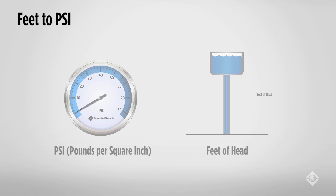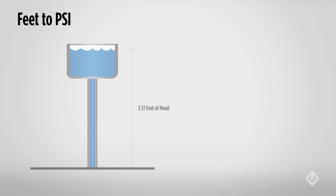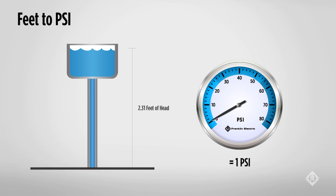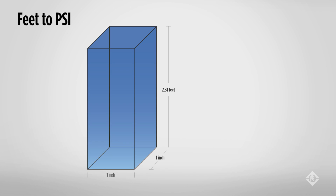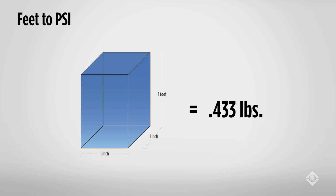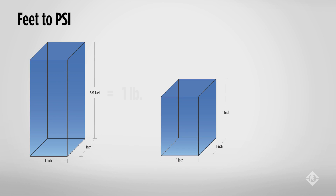The relationship between psi and feet of head is that 2.31 feet of head equals 1 psi. Translated, that means a column of water 1 inch square and 2.31 feet tall weighs 1 pound, or that a 1-foot column of water 1 inch square weighs 0.433 pounds. The two numbers — 0.433 and 2.31 — are the conversion numbers used to convert from one unit to the other.